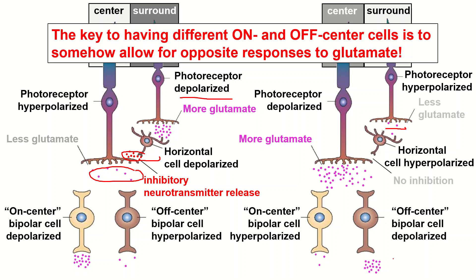The key to this difference rests solely in the on and off center cells due to their different receptors. Each bipolar cell will correspond to a ganglion cell that will show the same pattern of depolarization and hyperpolarization as the bipolar cell. So if the bipolar cell is highly depolarized, then the ganglion cell itself will also be depolarized and fire many action potentials.